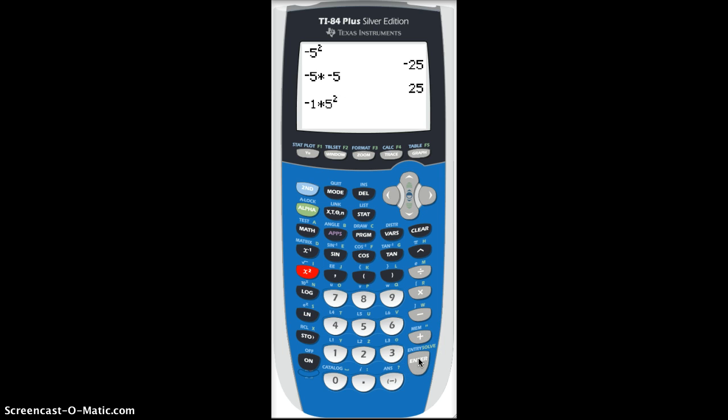So the 5 is getting squared, but the negative is not getting squared. And when we hit enter here, it's going to, of course, come out to be negative 25.